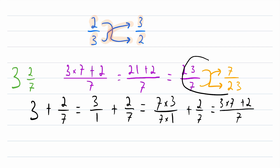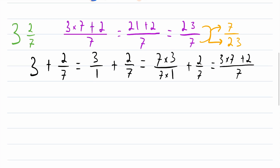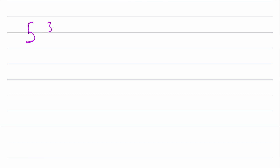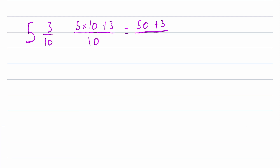Then we go through the standard procedure to find the reciprocal. Let's do one more example. Say we have the mixed number 5 and 3 tenths. To convert this into an improper fraction, we multiply the integer part 5 by the denominator 10, then add the numerator, and this is all still over 10. First we do the multiplication: 5 times 10 is 50, plus 3, all over 10. And then 50 plus 3 is 53 over 10.